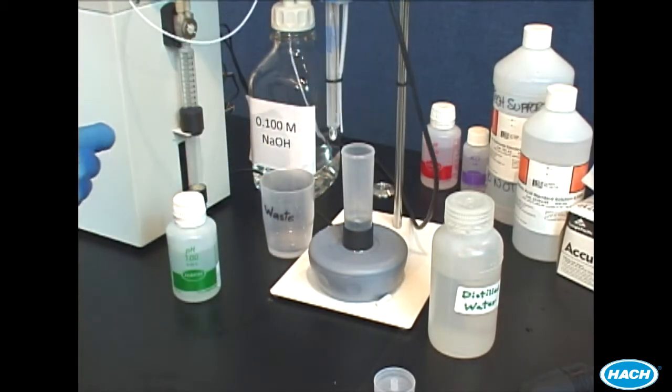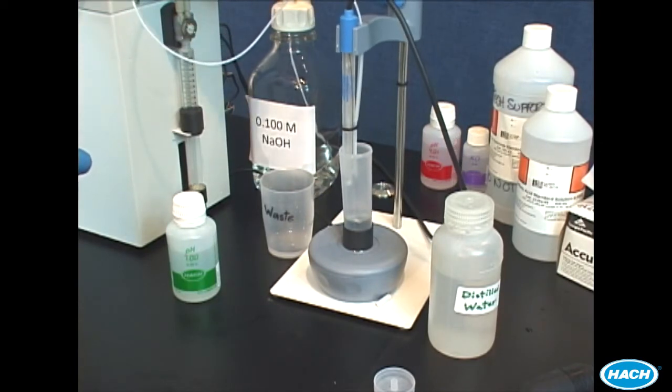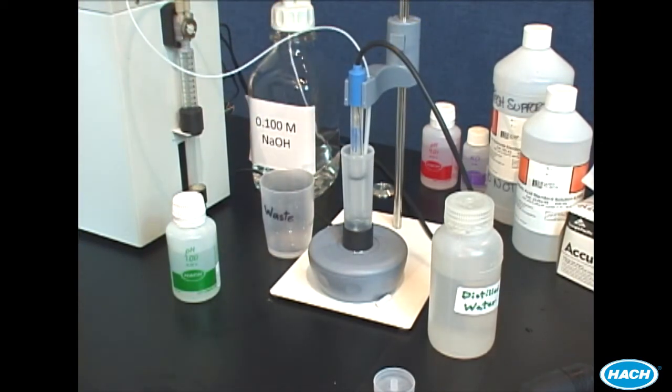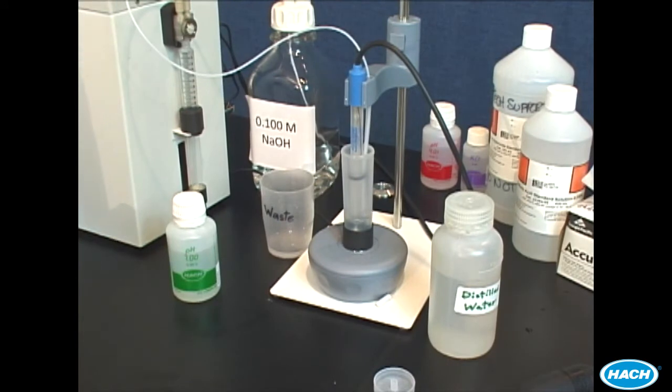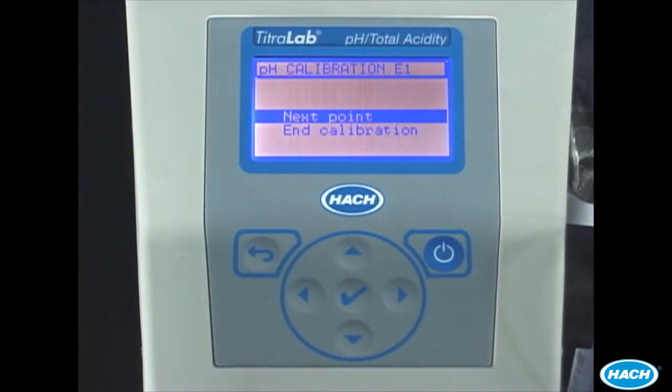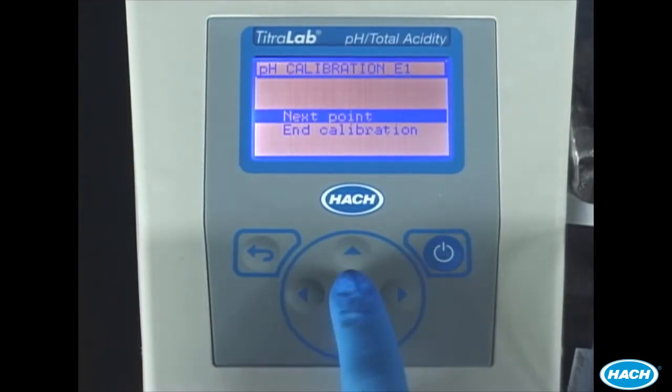Lower the pH electrode into the buffer, making sure the end of the pH electrode is completely immersed in the buffer. Select Next Point and press the check mark to begin measuring the pH 7 buffer.